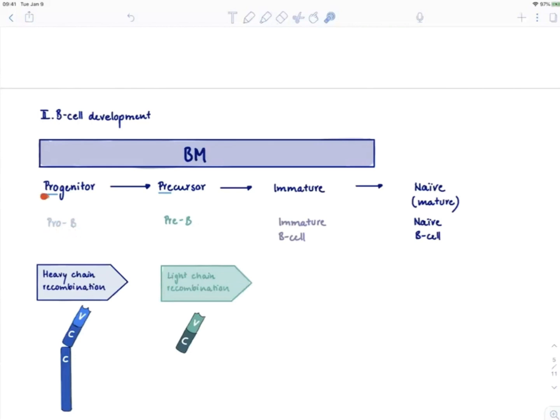It starts as a progenitor, also referred to as a pro-B cell, then becomes a precursor or pre-B cell, then an immature B cell, and eventually becomes a naive B cell. This naive B cell will eventually leave the bone marrow to recirculate between secondary lymphoid organs, for example to hang out in the lymph node where it waits to become activated.